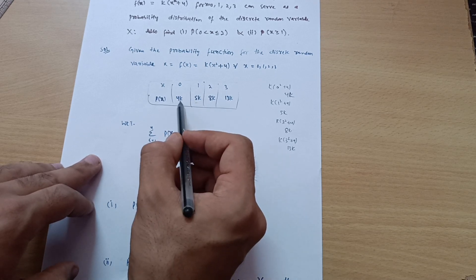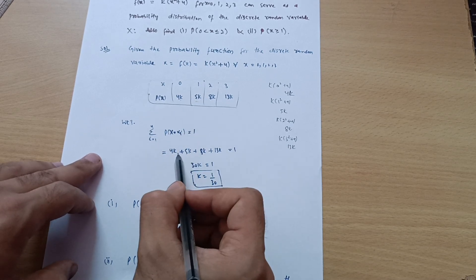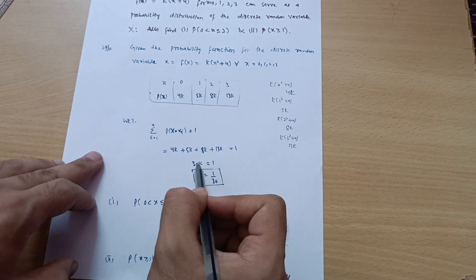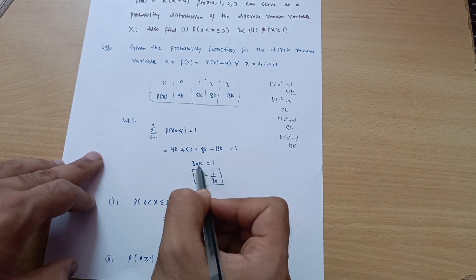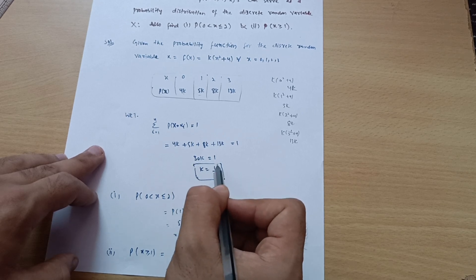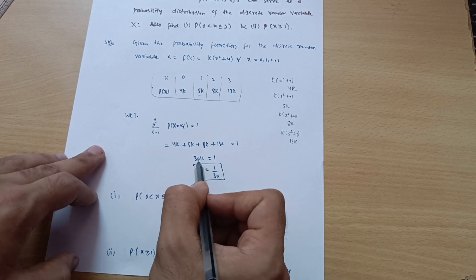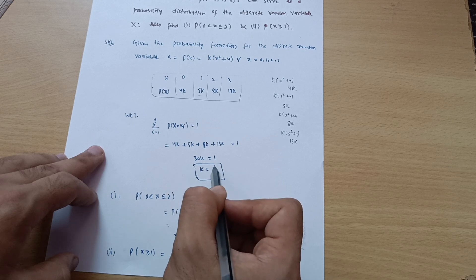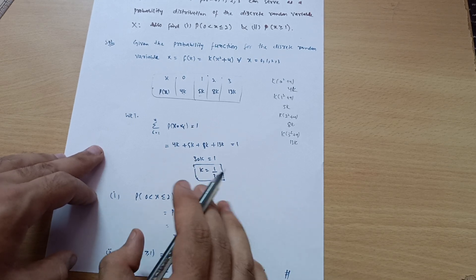Just sum up these terms: 4k + 5k + 8k + 13k = 1. You will get 30k = 1. So k = 1/30 if I shift this 30 to the right hand side, it will get divided. So 1/30 is your k value.